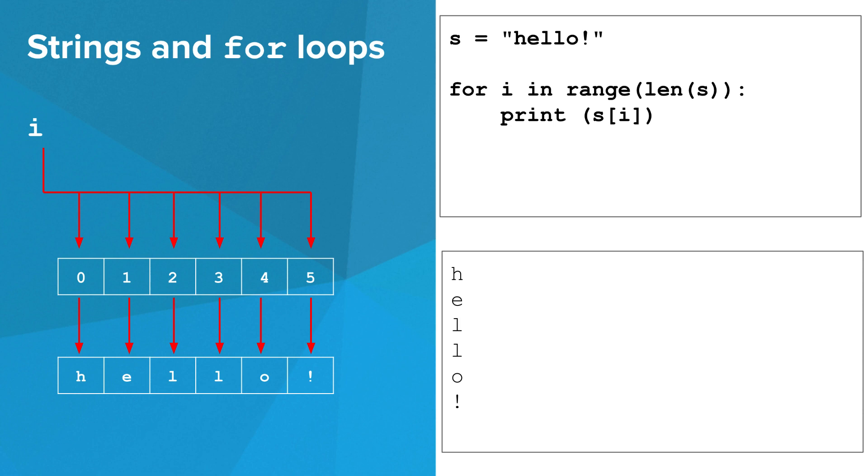Here's another way of thinking about writing a for loop over a string. The variable in the for loop, i, goes from 0 up to but not including the length of the string. Since this set of numbers conveniently maps to the set of indices in the string, we can just use i as an index in the for loop.